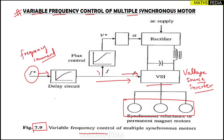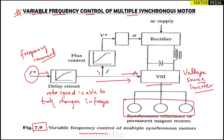Now, why are we using this delay circuit? The purpose of the delay circuit is so that the rotor speed of the motor is able to track the changes in frequency. Whatever change there is in the frequency, the rotor speed will be able to track it. That is why the delay circuit is being used.